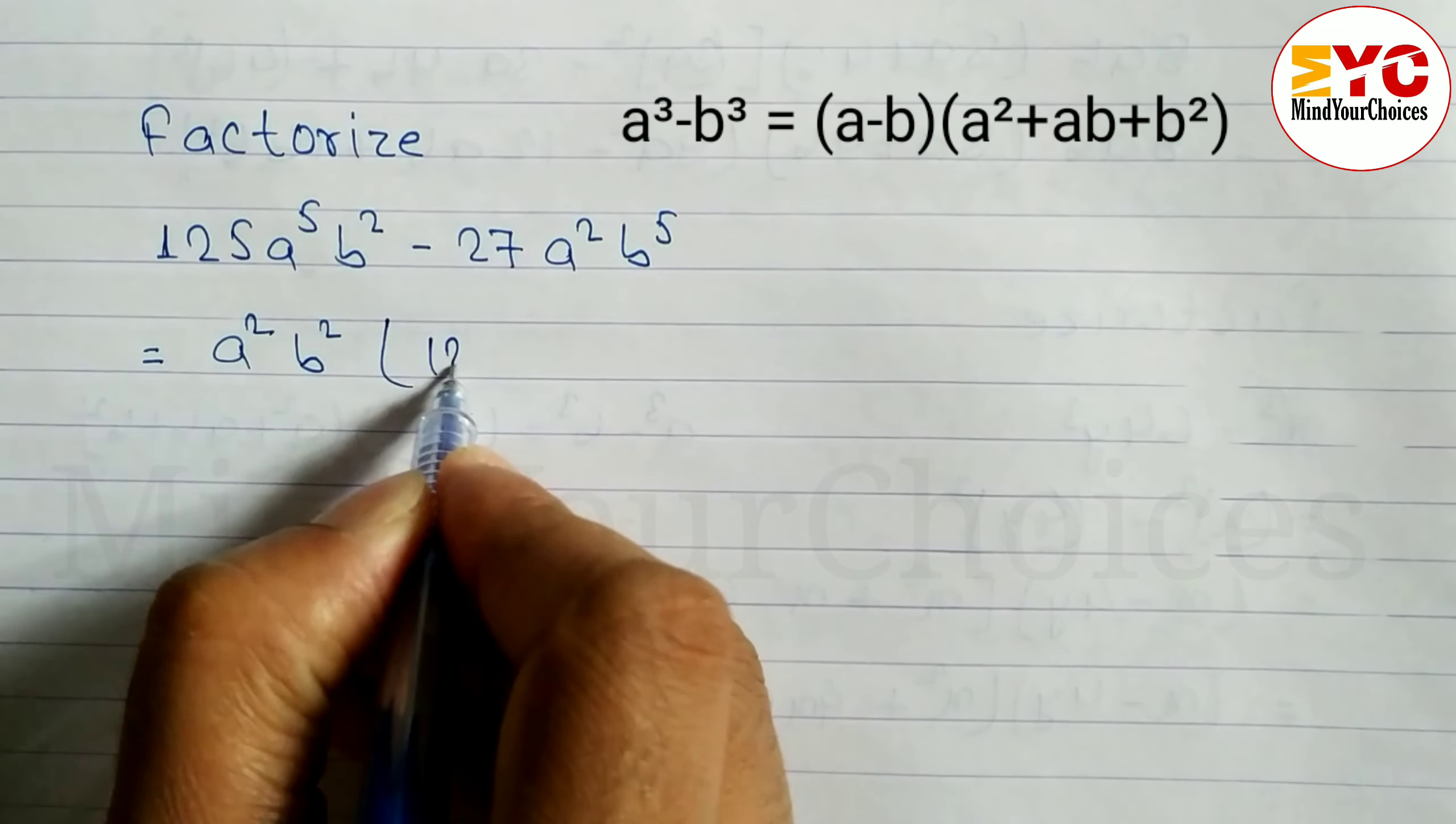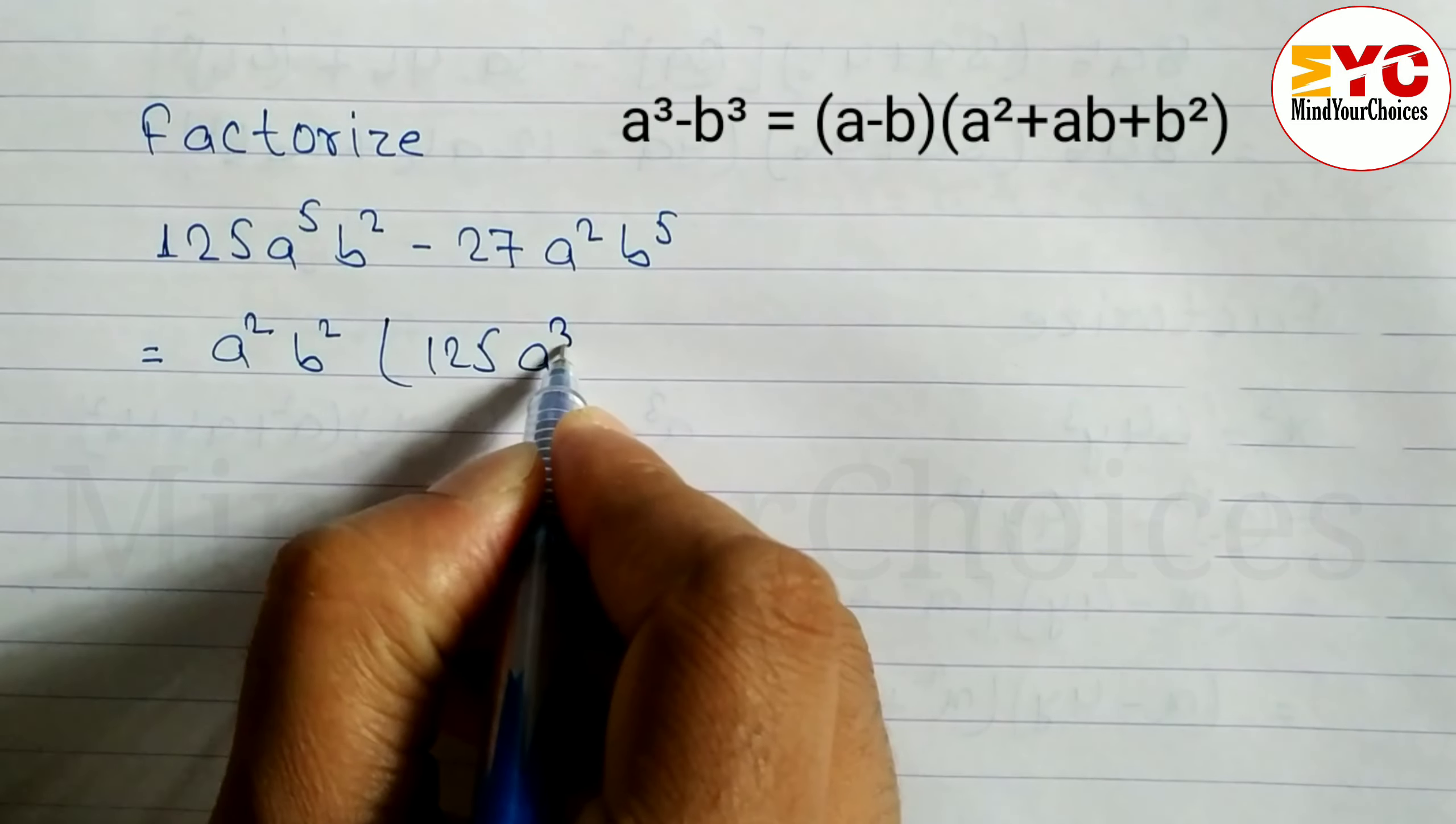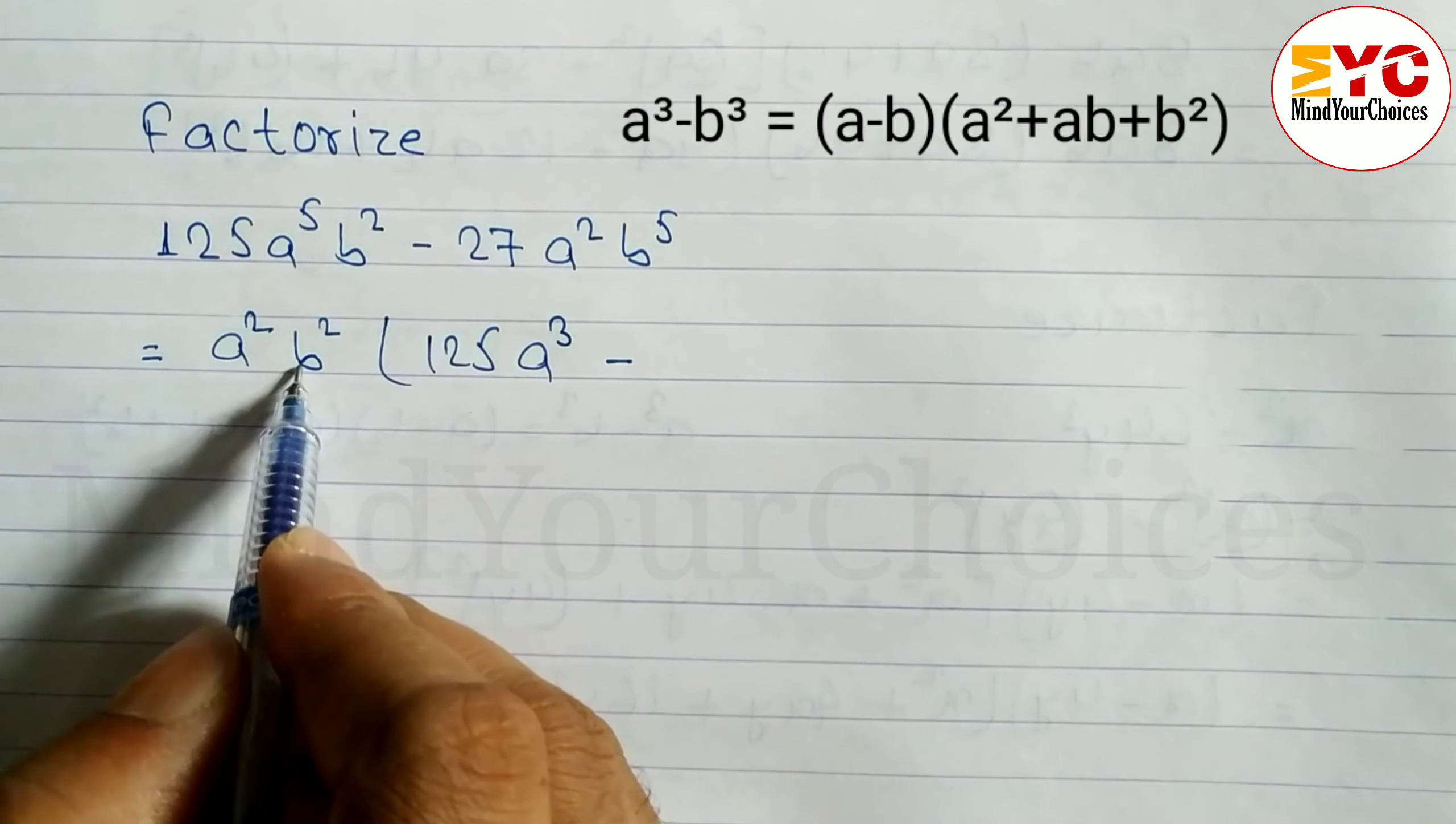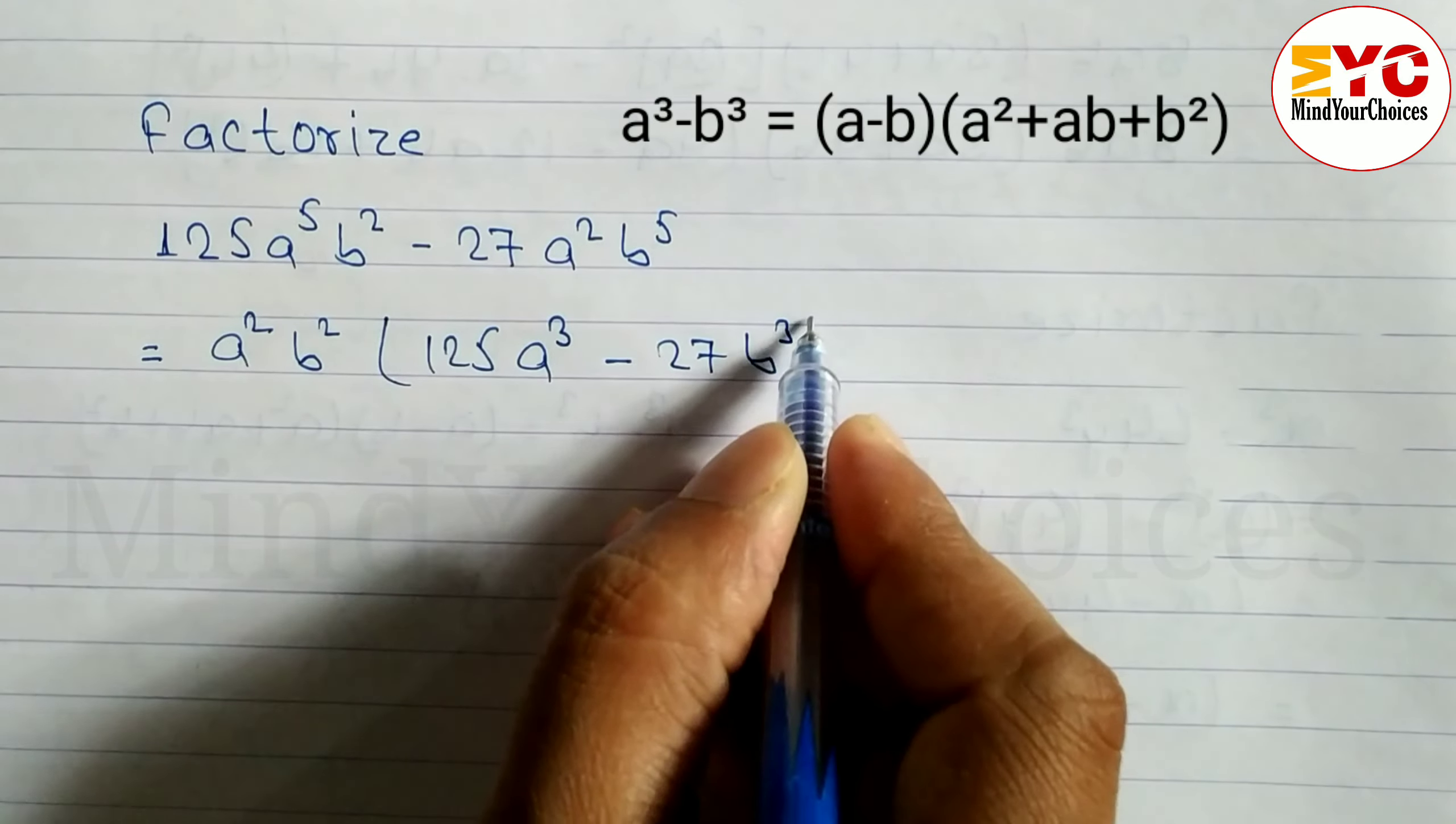From 125 and a⁵, taking a² common gives us a³ remaining. From a² already common, and from b⁵ with b² common, we have 27b³ remaining.